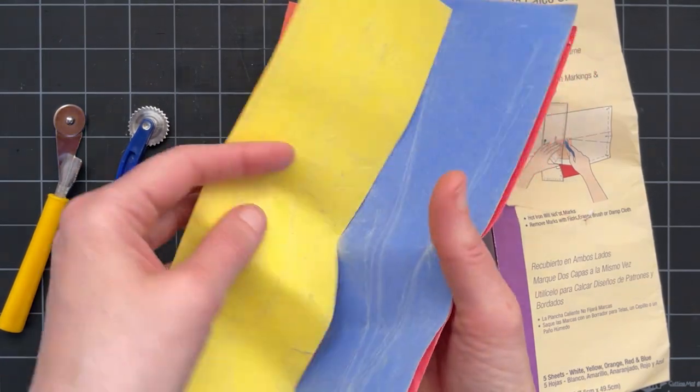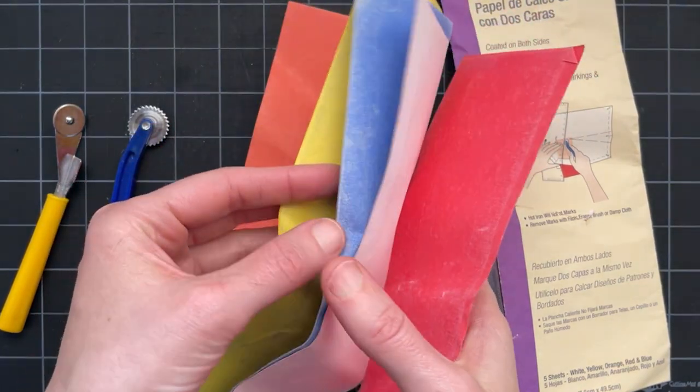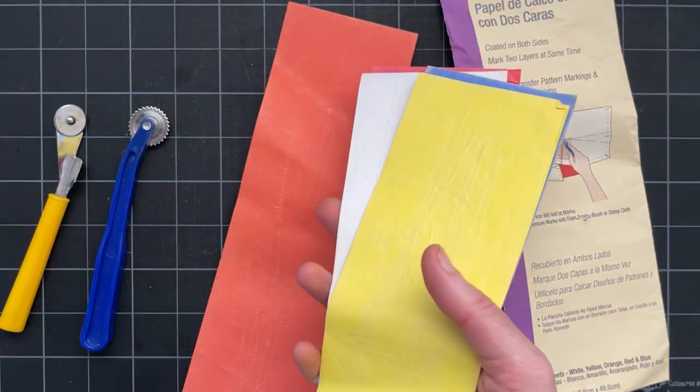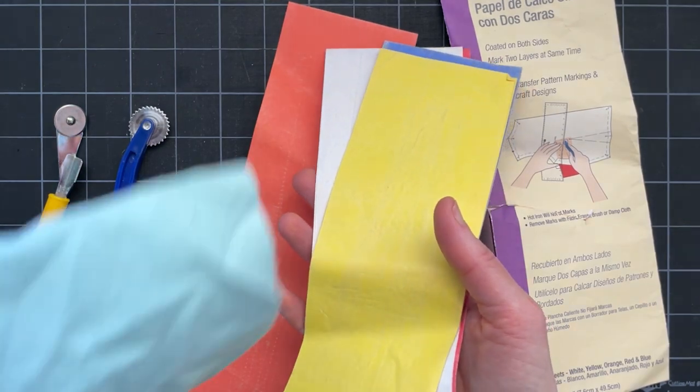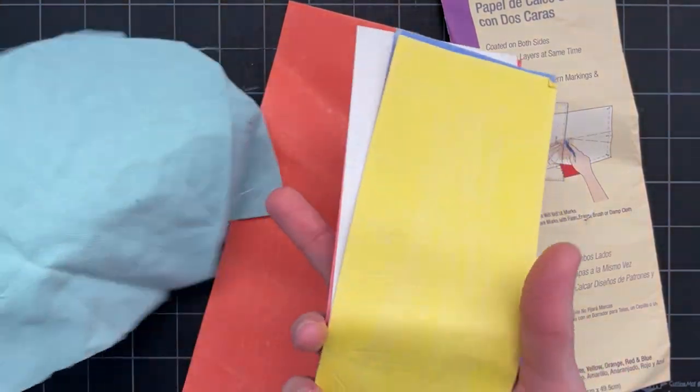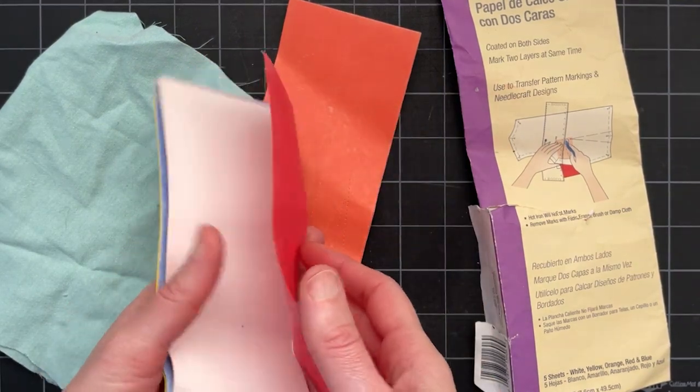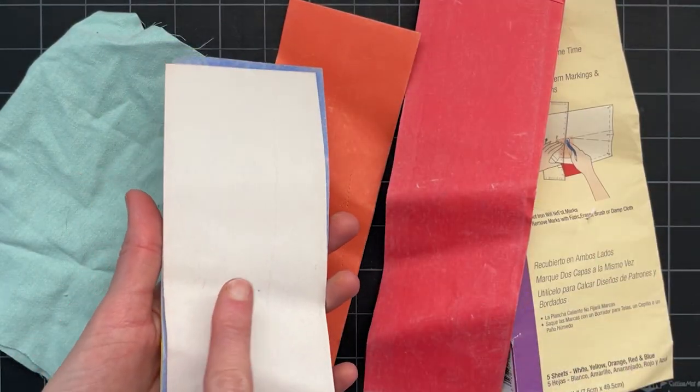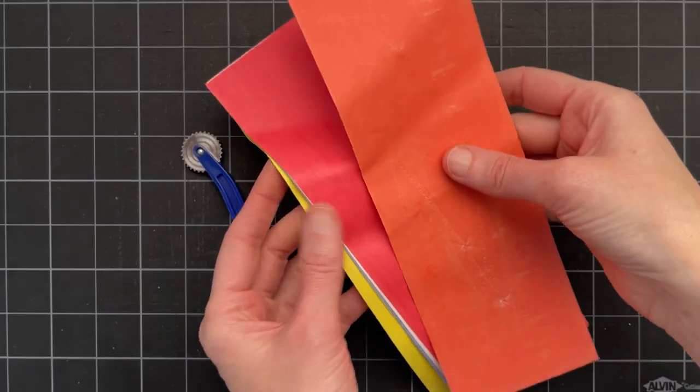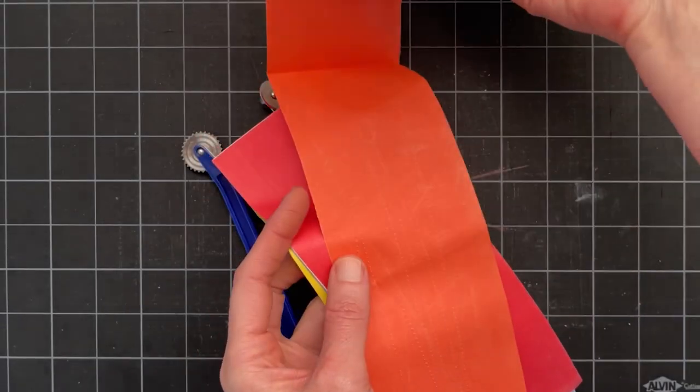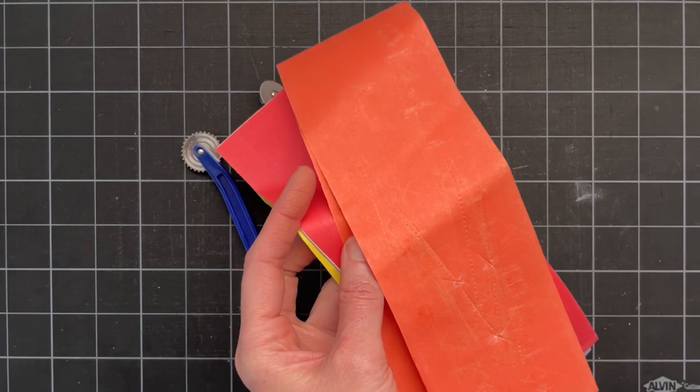The paper comes in a variety of colors and you'll want to choose the color that works best with your color of fabric. I'm going to test this out on a light color of fabric so I could probably use the red or the blue. If you have a dark fabric you would want to use the white or the yellow. So this paper conveniently comes folded and I'm going to show you why.